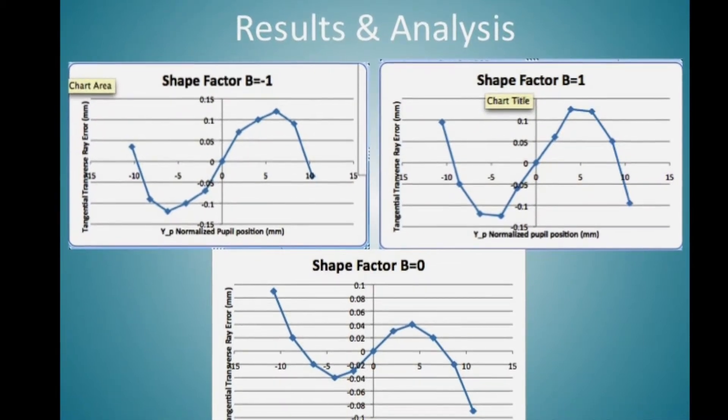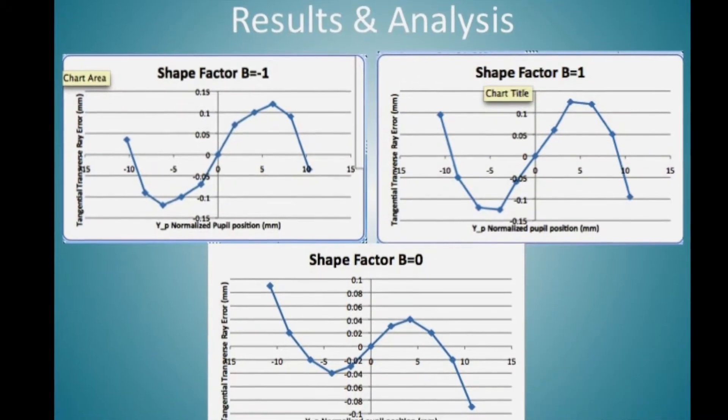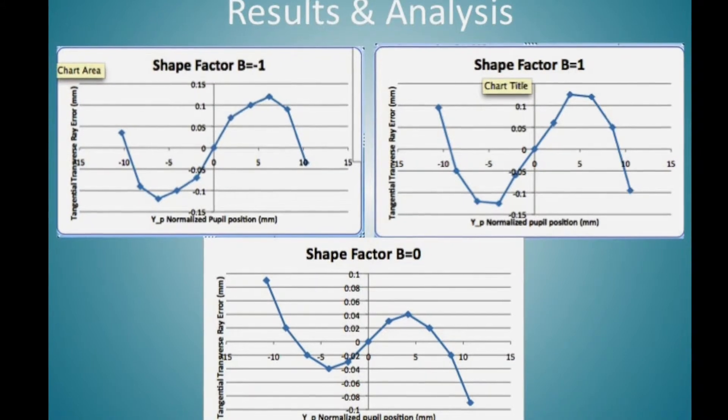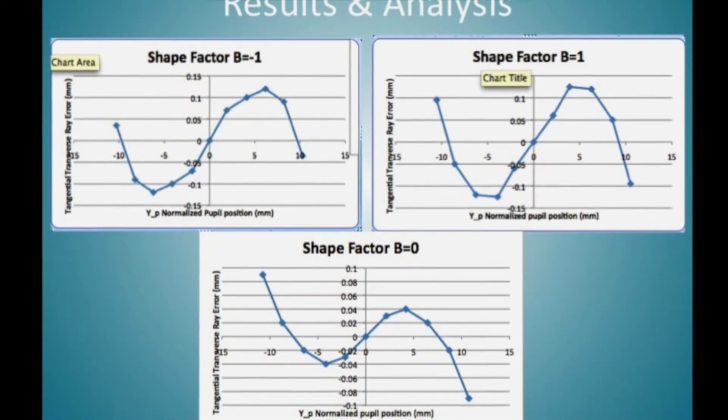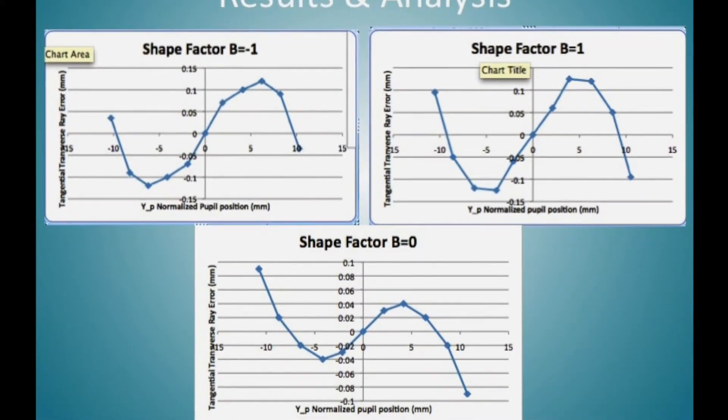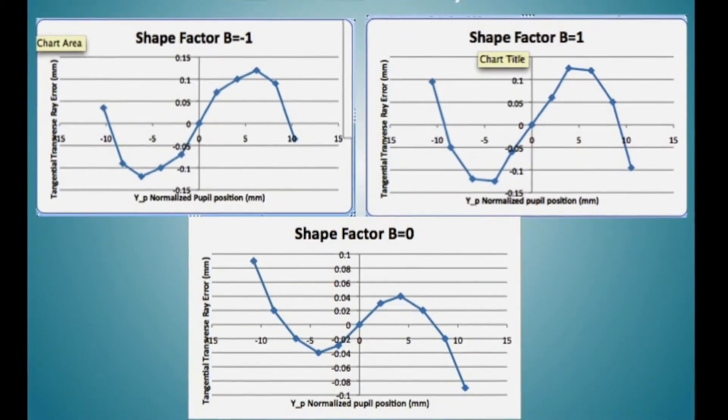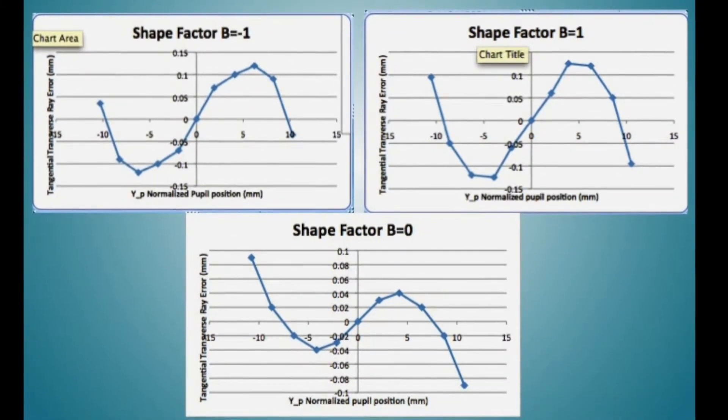In these plots, the shape factor of b equals zero with the biconvex lens yielded the least aberrations. However, the plots for b equals plus and minus one look surprisingly similar. We expected that b equals one would have the least spherical aberrations, and therefore show a linear slope since defocus would dominate. We suspect that we accidentally unflipped the lens between the two measurements, so we actually measured the same thing twice.